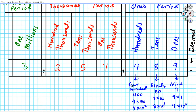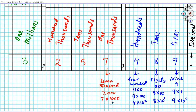Let's move on to the thousands period. We have seven in the one thousands place, so that is going to be seven thousand. Written in numerical form it's seven thousand. In expanded form without exponents it's seven times one thousand. Using exponents, since there are three zeros, it's seven times ten to the third power. We went over this in lesson 1.1.